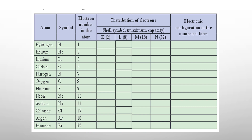Then you have the distribution of electrons. We saw this in the last class: K shell is the first shell, L is the second, M is the third, and N is the fourth. The numbers in brackets are the capacity of each shell — 2, 8, 18, and 32. Whatever you write in these four columns of K, L, M, and N, based on that you fill in the electronic configuration in the last column.